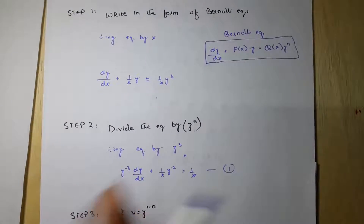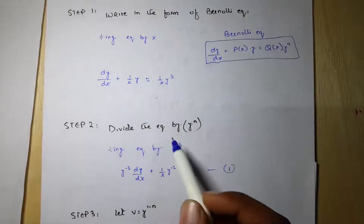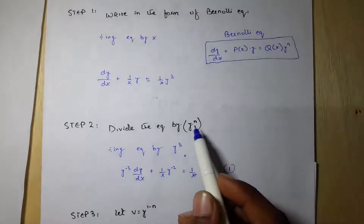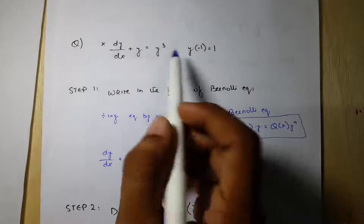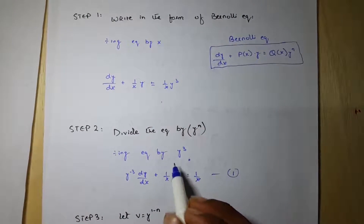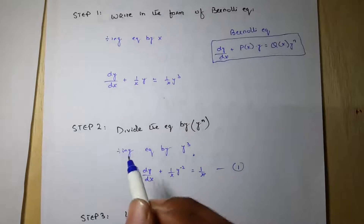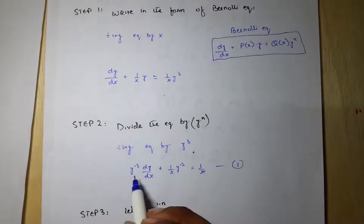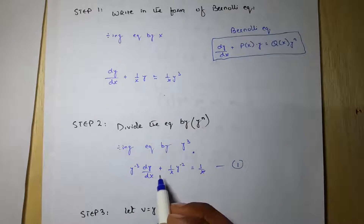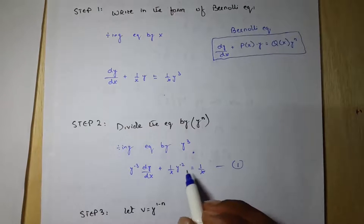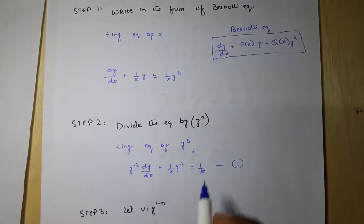We are on Step 2, which is to divide the equation by y to the power n. As you can see, n is equal to 3. So by dividing the equation by y cubed, after dividing, the equation will be y^(−3) dy/dx plus (1/x)y^(−2) equal to 1/x.